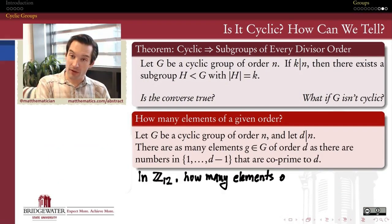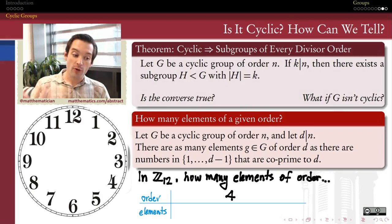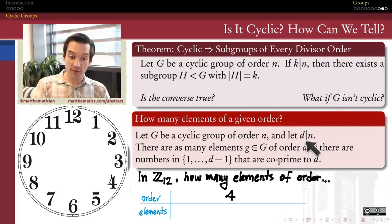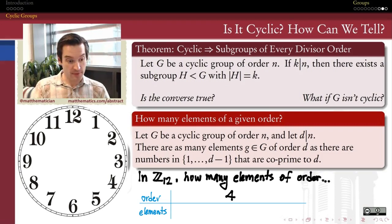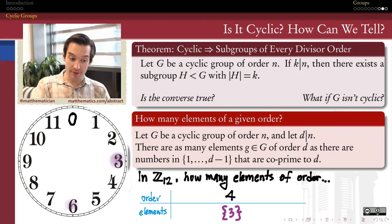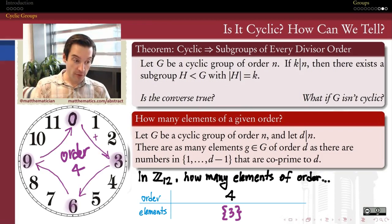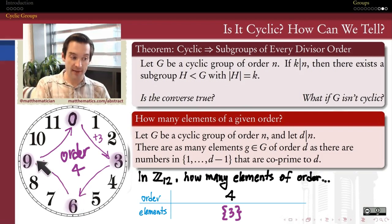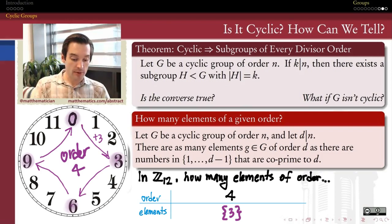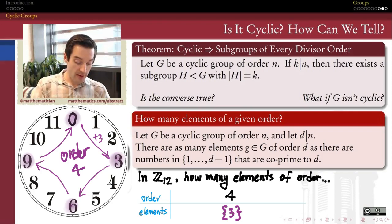Let's think about Z mod 12 and ask that same question for all the different orders. We know, based on the earlier theorem, that as long as d divides the order of the group, we can find a subgroup of order d generated by an element of order d. This is going to be an exercise in counting how many such elements we have. And again, 3 was one of our elements of order 4 in this mod-12 clock group — it has order 4 because starting from identity 0, adding 3 four times brings us back to 0. Is there any other element of order 4?